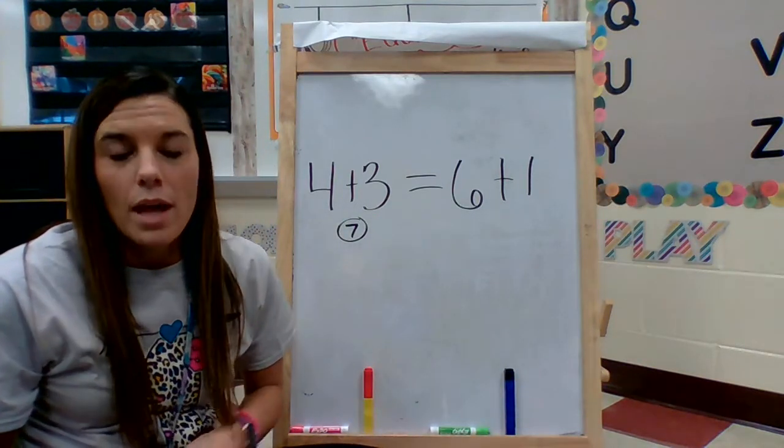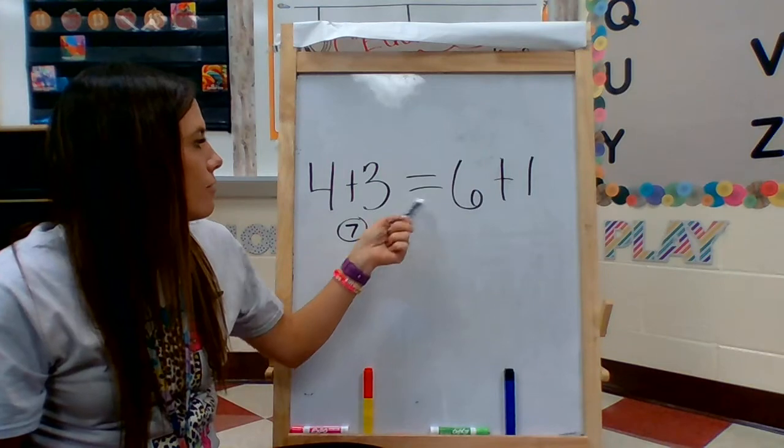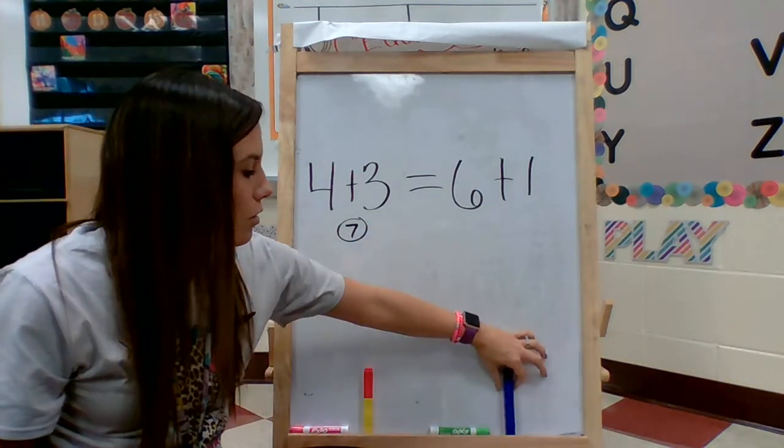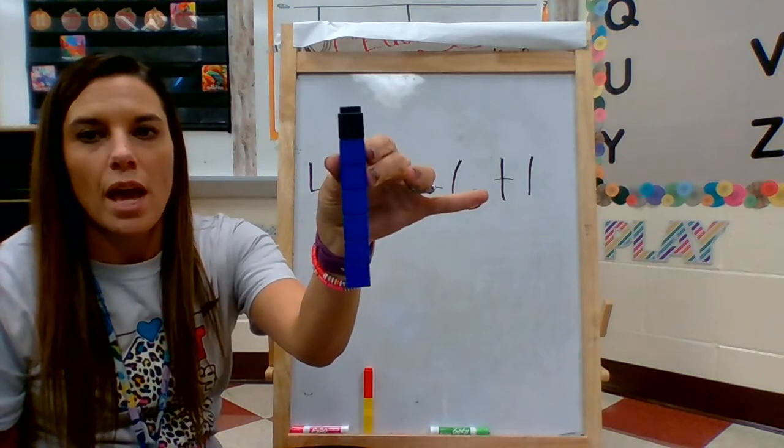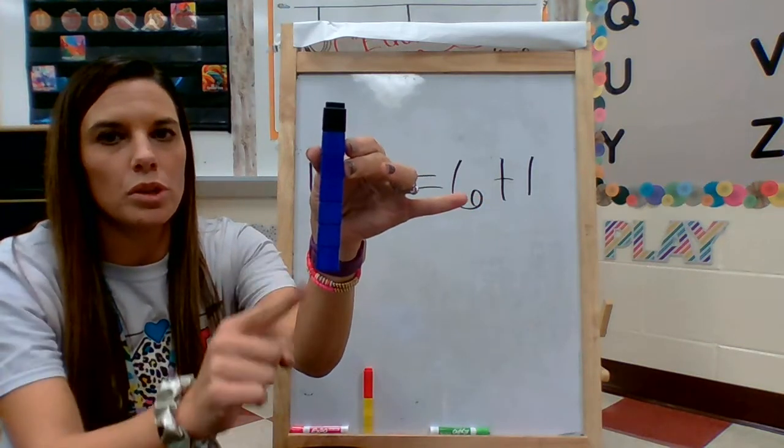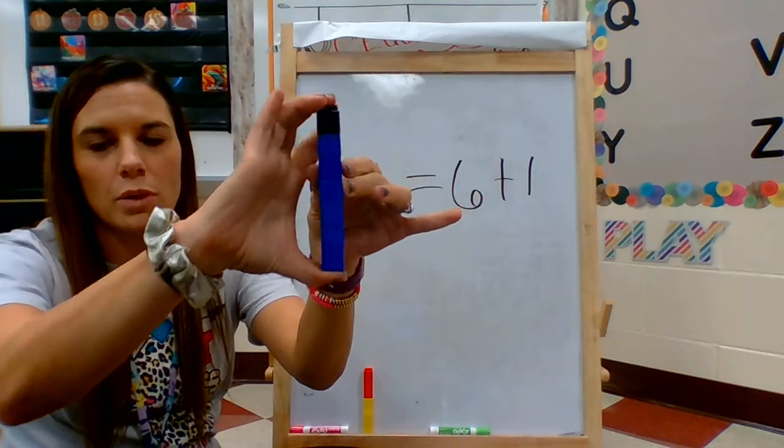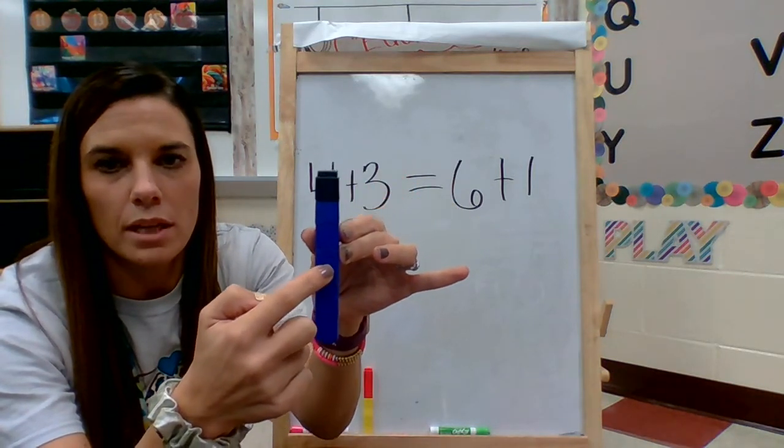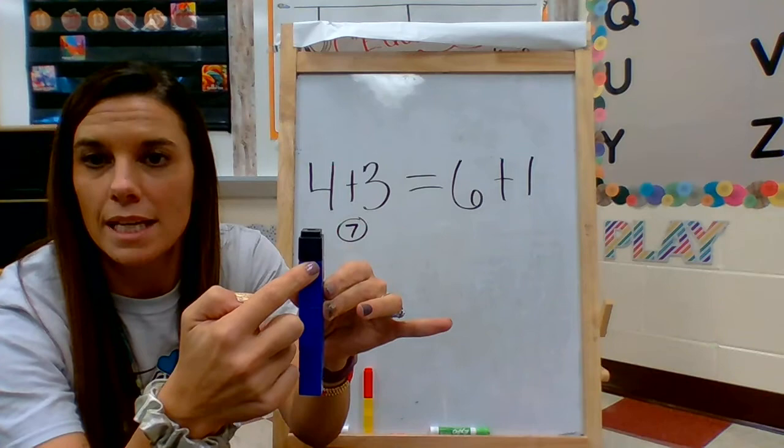Now let's figure out if 6 plus 1 is the same as 4 plus 3. I have another tower. I made 6 blue cubes and 1 black cube. Let's count them. Ready? 1, 2, 3, 4, 5, 6, 7.